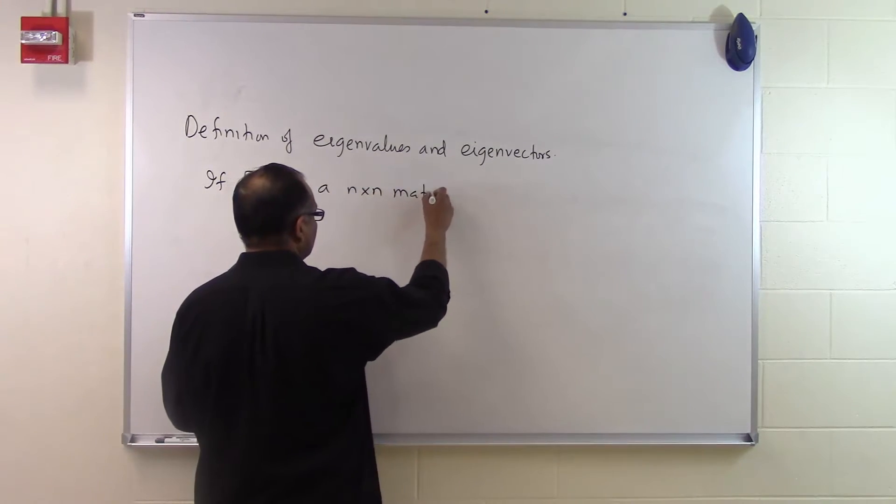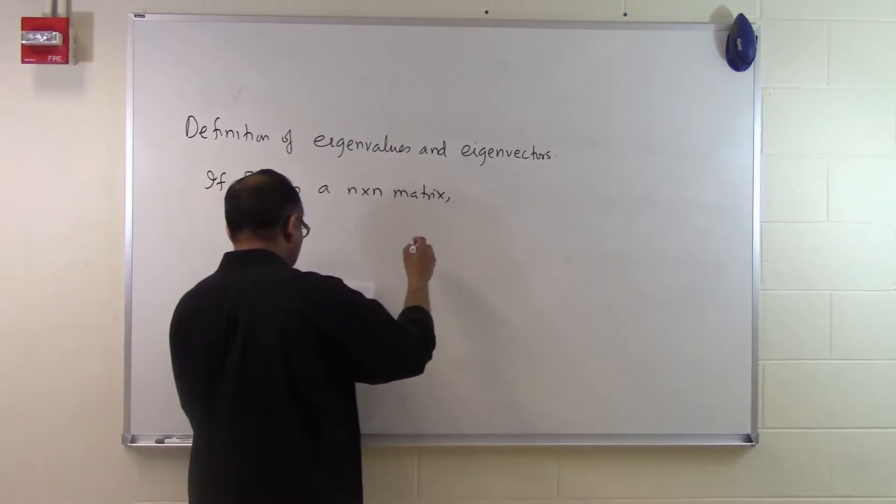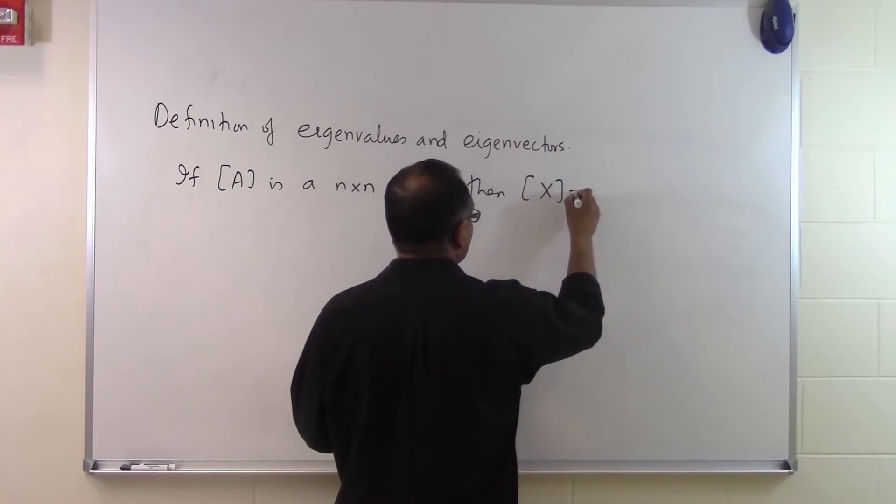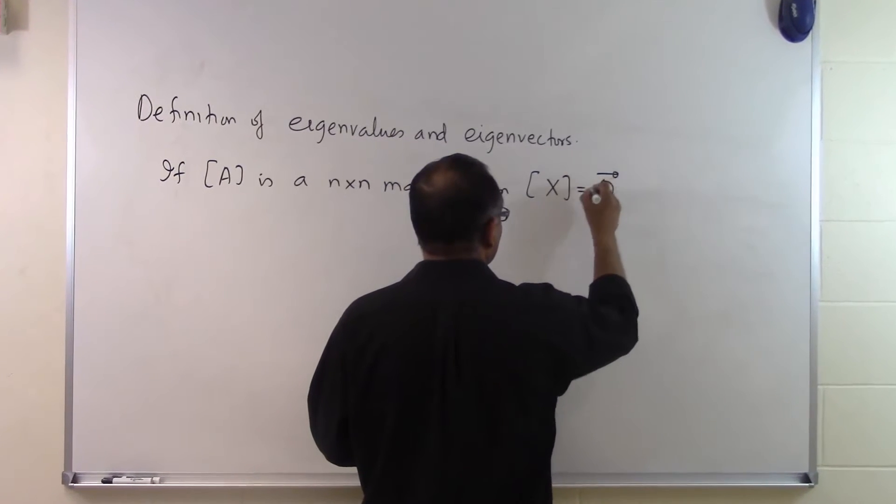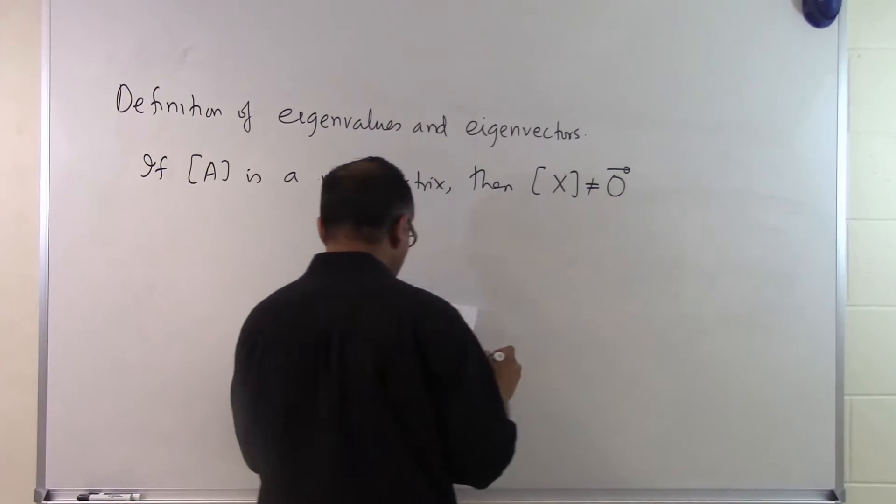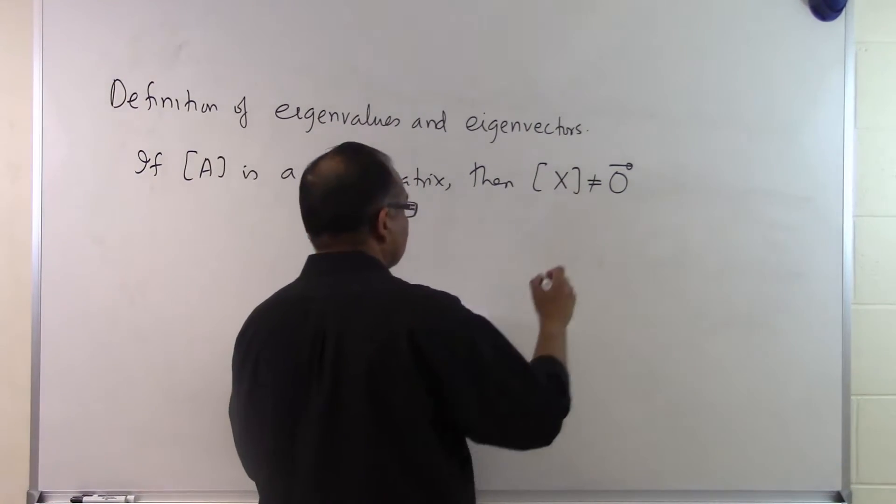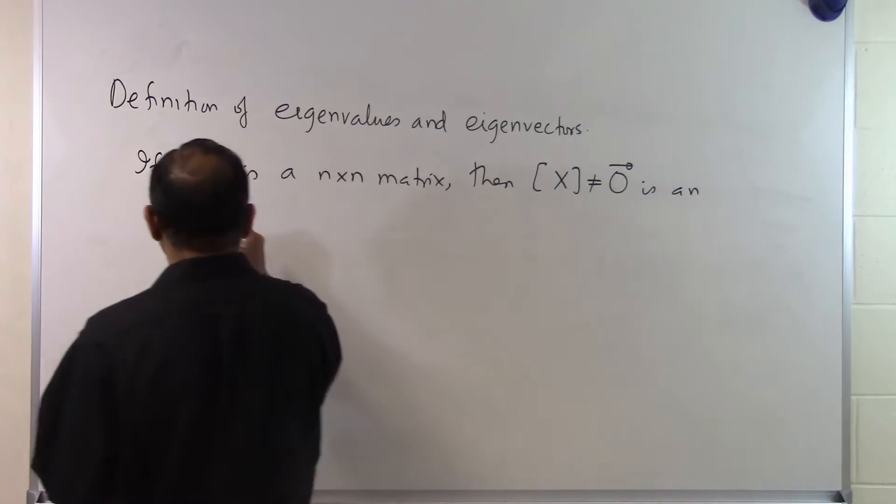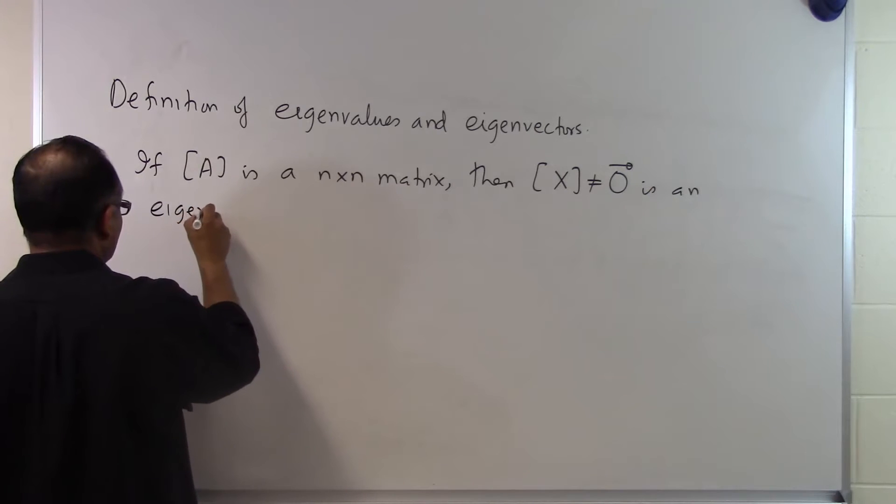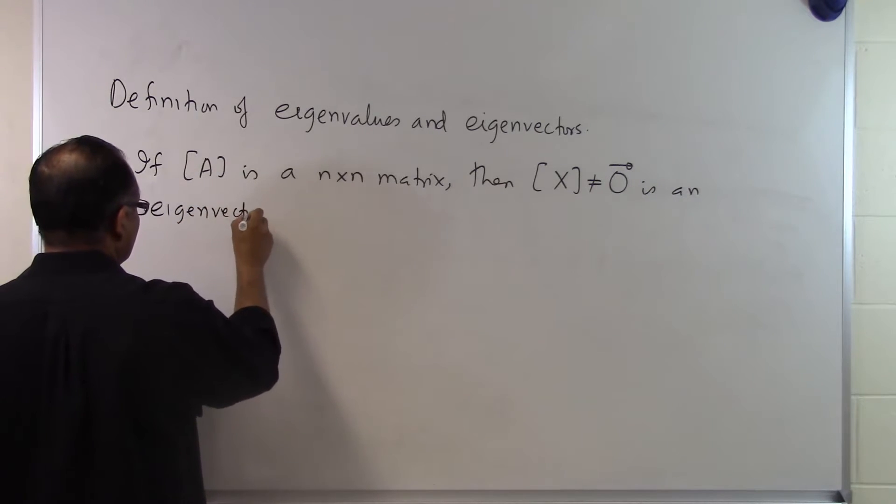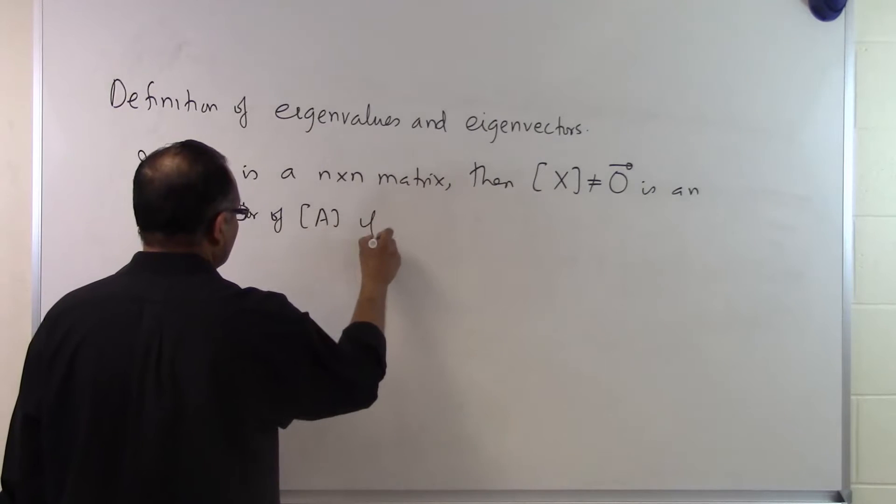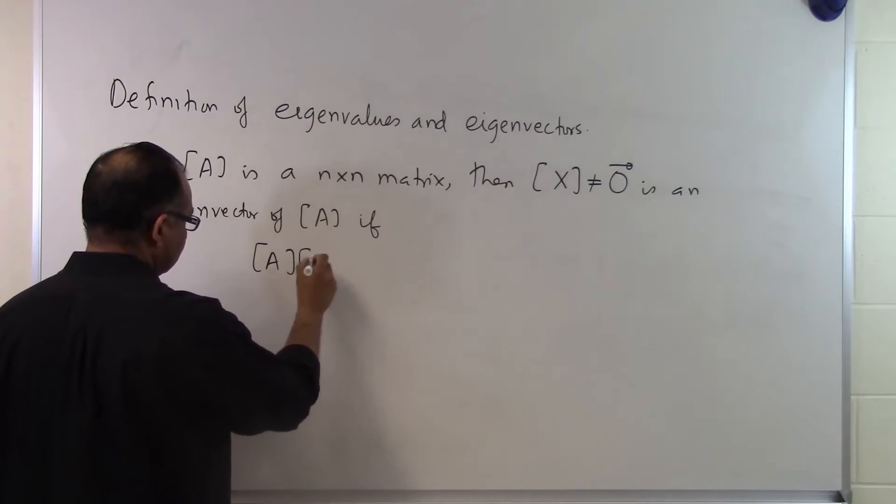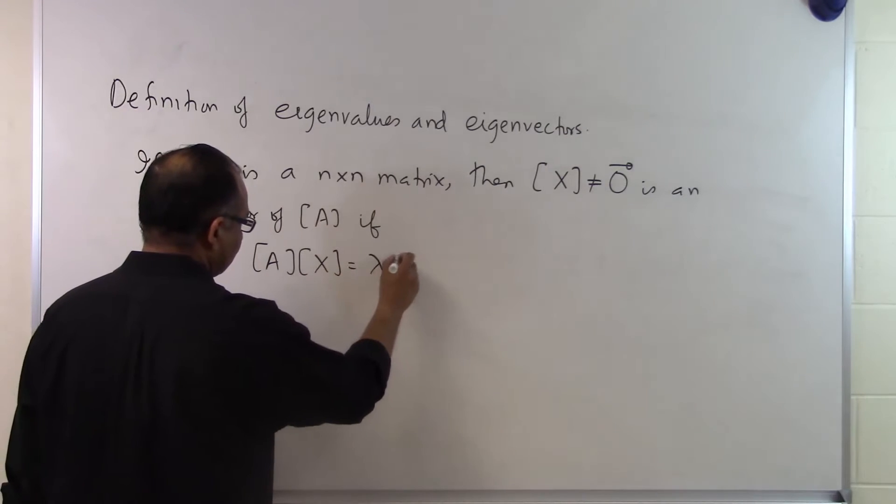then if we look at a vector x and we say it's not equal to zero, is an eigenvector of A if A times x is equal to lambda times x.